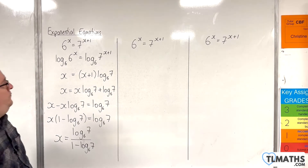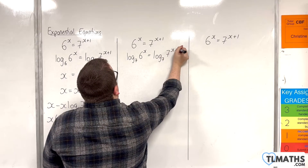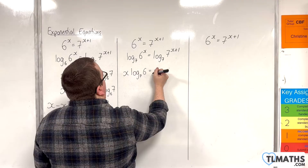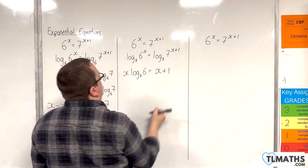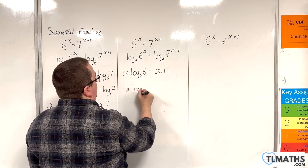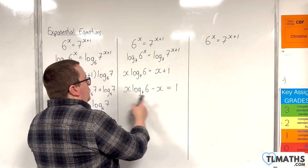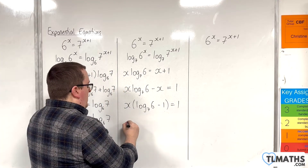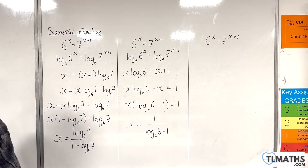Now let's look at base 7. Take log base 7 of both sides. On the left-hand side, the x comes down to the front using the power rule. On the right-hand side we have log base 7 of 7 to the x plus 1, which is just x plus 1. I'm going to leave the 1 on the right-hand side and subtract x from both sides, then factorise the left-hand side and divide both sides by the bracket. The steps there were a little bit shorter — one step shorter.